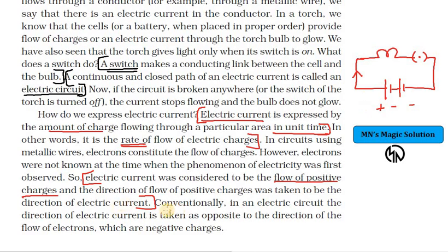So flow of positive charges, they had taken as the flow of the electric current. So if you have a circuit like this, this is positive of the battery, this is negative of the battery. So positive to negative, the current's direction we use to symbolize. But actually from the negative terminal, electrons are moving, and that's the actual current flow.